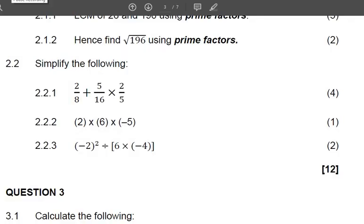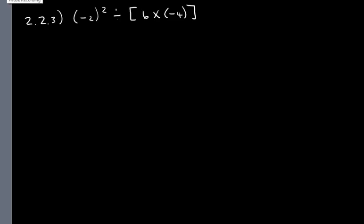Let's look at our last question. 2.2.3 Negative 2 squared divided by, and in brackets we've got 6 times negative 4, close brackets. According to Bodmas rules, we need to first work out our brackets. What is negative 2 squared? Negative 2 squared is the same thing as negative 2 times negative 2.